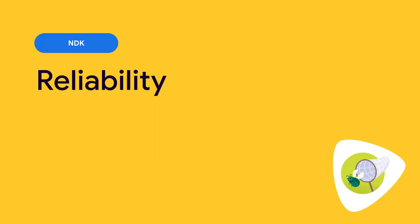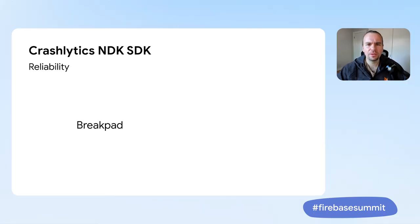Reporting that a crash has occurred is arguably the most important job of a crash reporter. But as the POSIX standard tells us, reliably capturing all crashes in the native world is not so straightforward. In the previous version of the Crashlytics NDK SDK, we used Google's open source crash capture client called Breakpad. Although Breakpad was good, it struggled to accurately capture crashes in certain circumstances due to its architectural decisions.